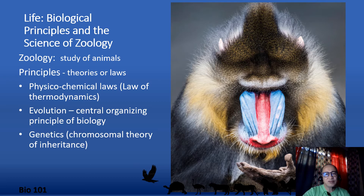A few of the important principles include the laws of thermodynamics, which is the principle about energy flow and transformation; the theory of evolution, the principle about population change that lead to new species; and the principle of genetics, the principle about transmission of heredity. Scientific principles are important not only because they give us working perspectives and methods in scientific study, but also because they allow us to examine the validity of our findings in zoological studies.